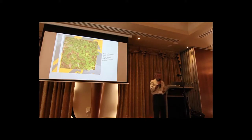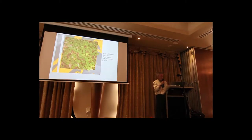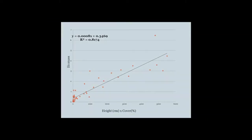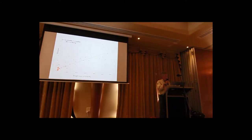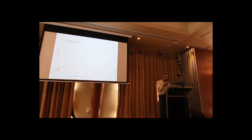We undertook a regression analysis of the data to generate a relationship between height and cover — which we're actually measuring on site — and the actual biomass. As biomass is a volume measure, we thought a linear relationship between biomass and the product of cover and height would be the way to go. We ran that through the computer and came up with a relationship shown on the screen. So what that means now is when we're out in the field, all we need to do is measure height and cover of the predominant species on the ground, plug it into this formula, and we come up with a biomass.